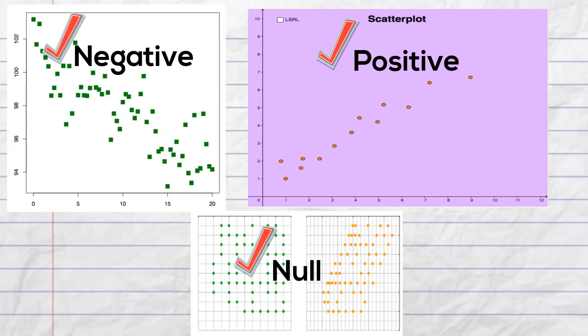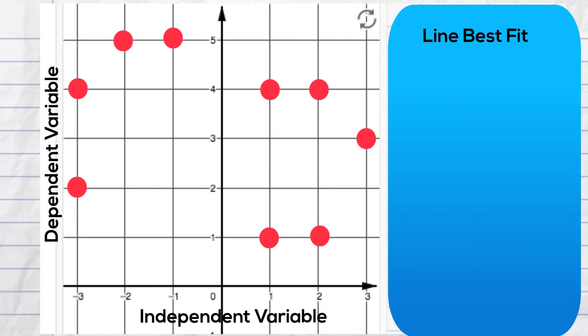This is where the line of best fit can help out. A couple of tips for drawing the line of best fit. First, determine the direction of slope.